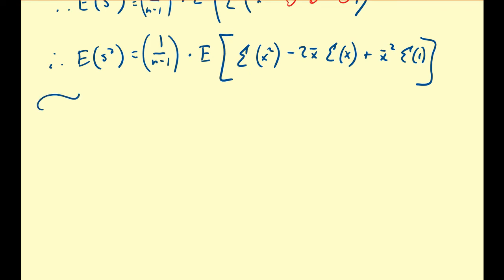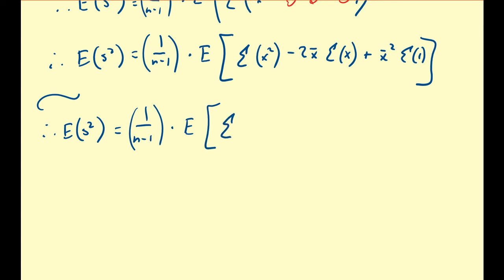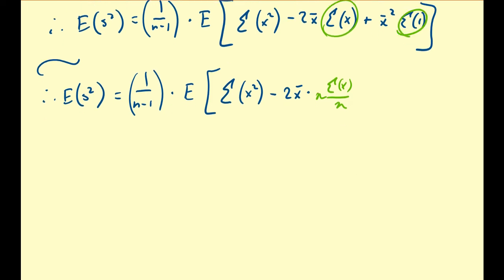Now, for the middle term, I'll rewrite the sum of X by dividing and multiplying by n — which doesn't change anything — recognizing that the sum of X divided by n is precisely X-bar. So the expression inside becomes: the sum of X-squareds, minus 2·X-bar·(n·X-bar), plus X-bar-squared·n. Note that the last two terms have the same exponents on both n and X-bar: negative two and positive one respectively, giving negative one total.